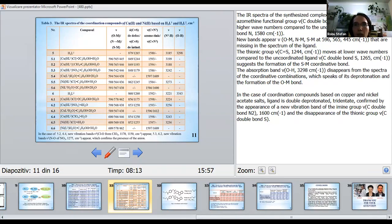The thio group ν(C=S) 1244 cm⁻¹ moves at a lower wave number compared to uncoordinated ligand, 1265 cm⁻¹, suggesting the formation of the S-M coordinative bond.